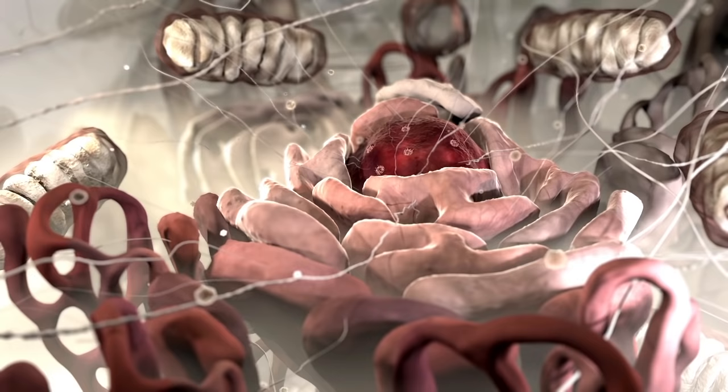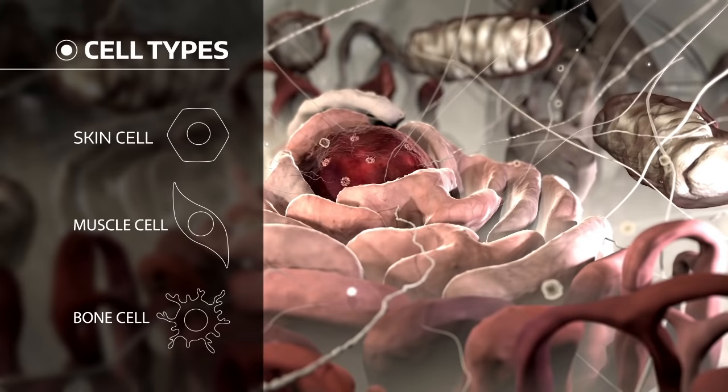This is a cell, the basic unit of all living organisms. Our body consists of different cell types like skin, muscle, or bone cells.